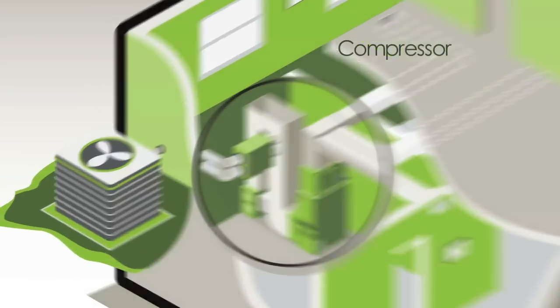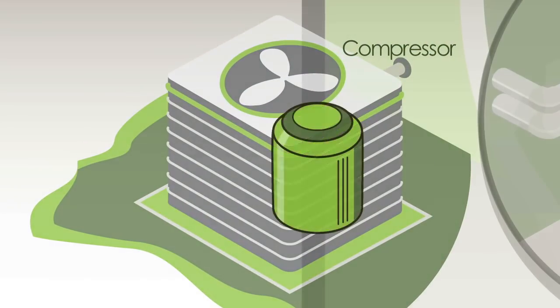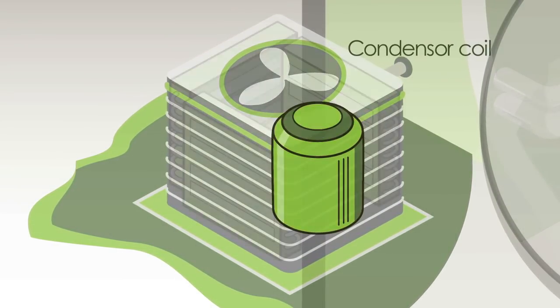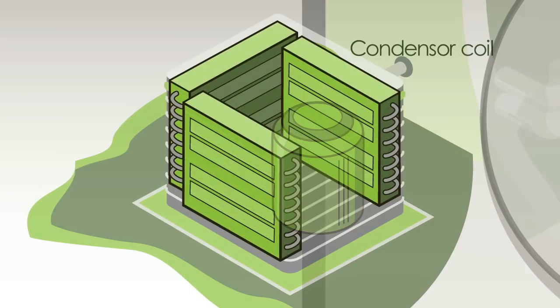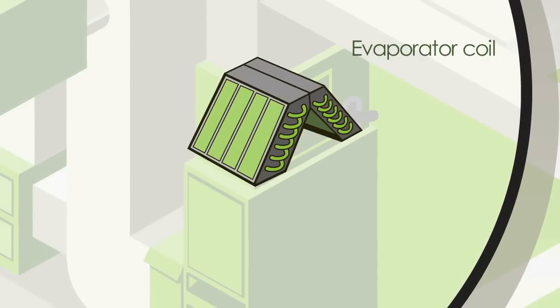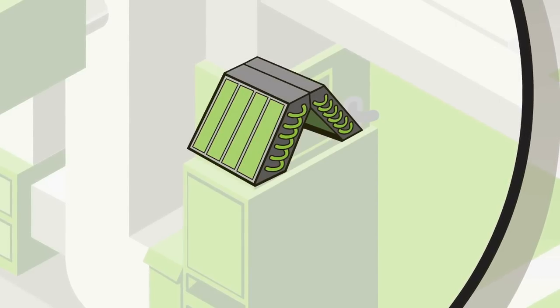Your air conditioning system is made up of three basic components: a compressor, located in the unit outside your home; the condenser coil, also in the outdoor unit; and the indoor evaporator coil, usually installed near your furnace or inside your air handler.